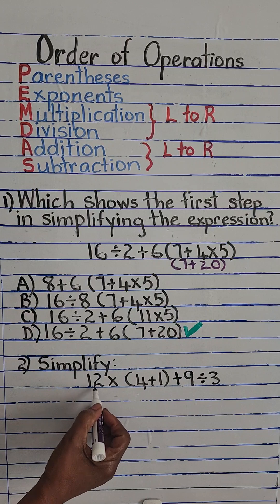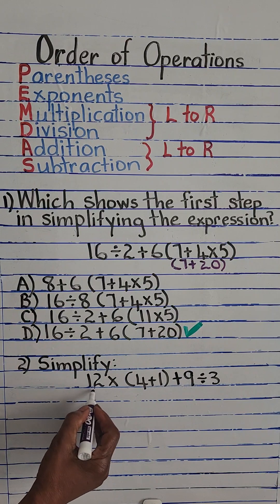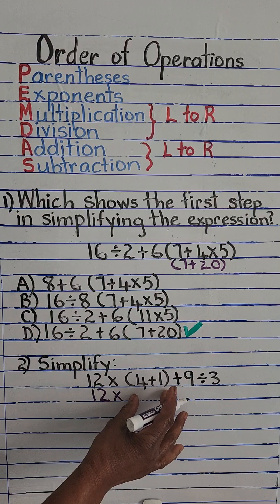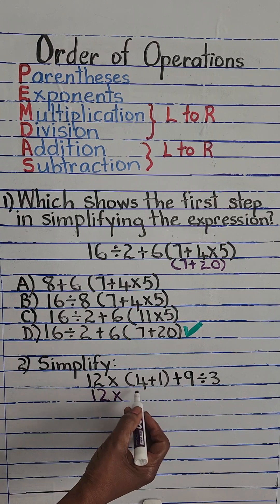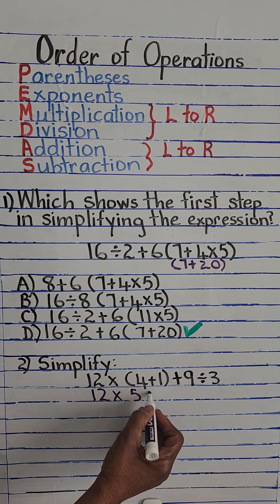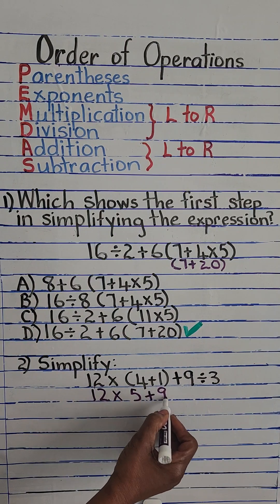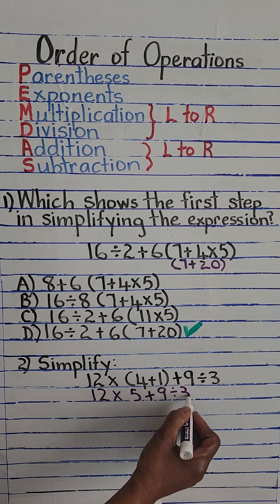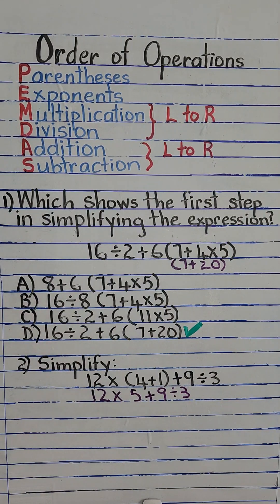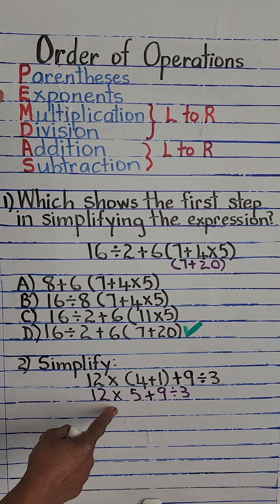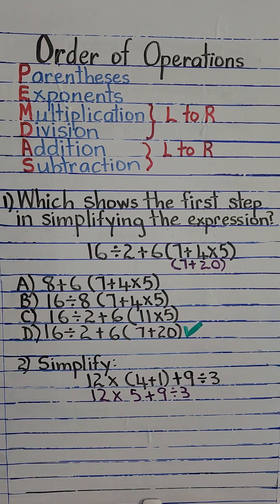We're going to put everything else down just the way it is and simplify the parentheses: 4 plus 1 equals 5. So we continue with 12 times 5 plus 9 divided by 3. That is step 1 — simplifying the parentheses.